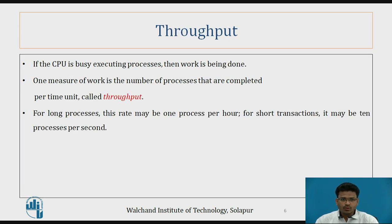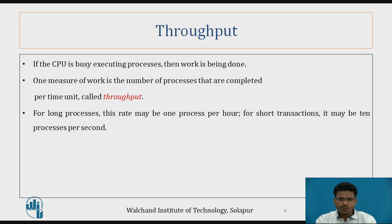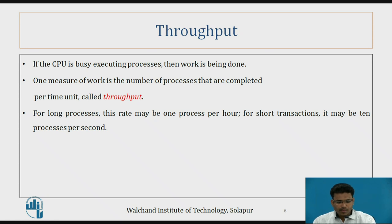Now throughput is nothing but the number of processes completed per unit time. When N number of processes are in the ready queue for execution, the number of processes executed in a given time period is the throughput. For a long process, this rate may be 1 process per hour; for a short transaction, it may be 10 processes per second.